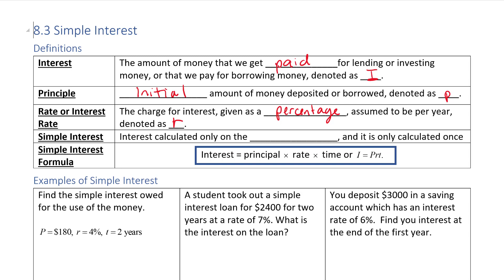Simple interest, and that's the interest we're going to be working on today, is the interest calculated only on the principal and it is only calculated once. So you don't earn interest on the interest if you're accruing more frequently, but we will talk about that when we're doing compound interest in another lesson.